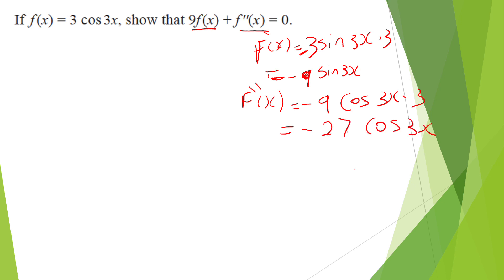Now simple substitution. So it's 9 multiplied by 3 cosine 3x, which is the function, plus the double differentiation. Simplifying this: 27 cosine 3x minus 27 cosine 3x.